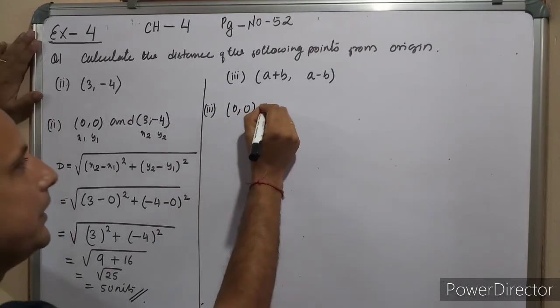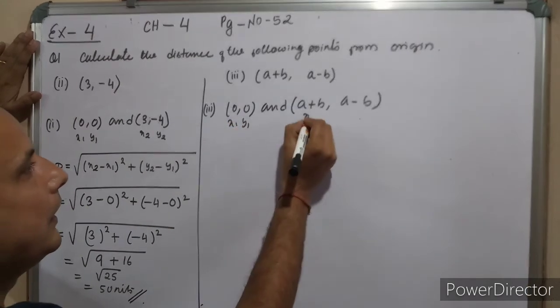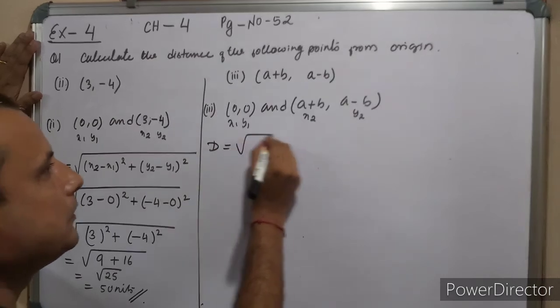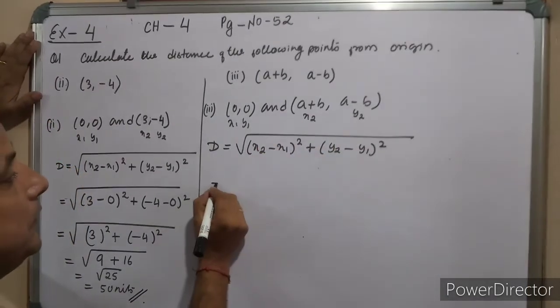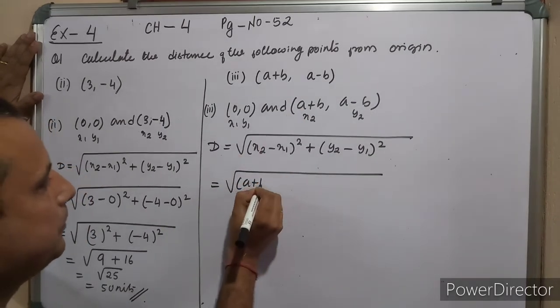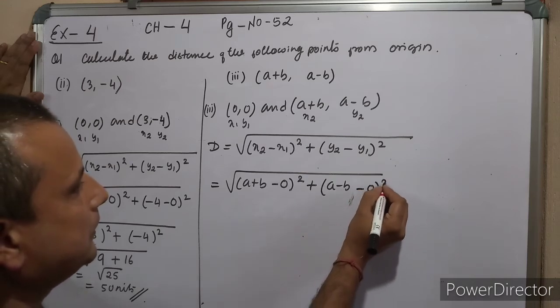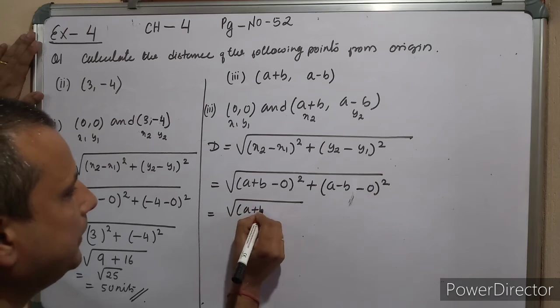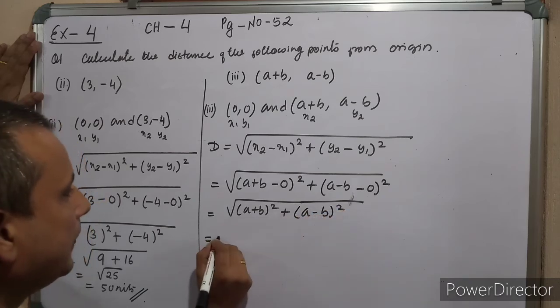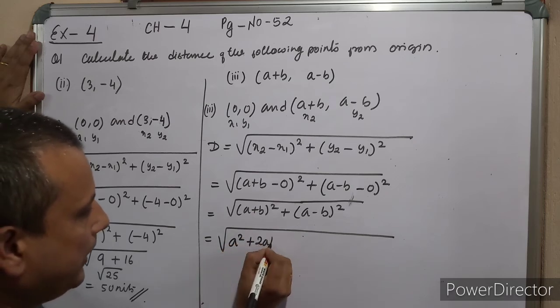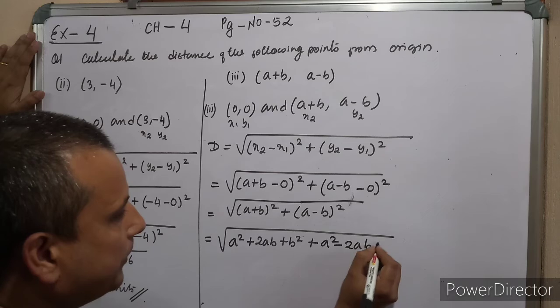(0, 0) and (a+b, a-b). x1, y1 and x2, y2. Formula: square root of (x2 minus x1) whole square plus (y2 minus y1) whole square. x2 minus x1 is (a+b) minus 0, which is (a+b) whole square. Plus y2 minus y1: (a-b) minus 0, which is (a-b) whole square. Using the formulas: (a+b) squared equals a squared plus 2ab plus b squared, and (a-b) squared equals a squared minus 2ab plus b squared.